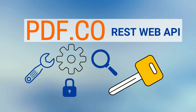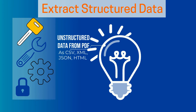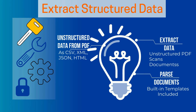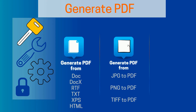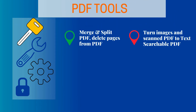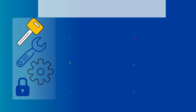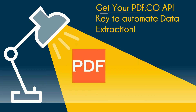PDF.co Web API key features include: extract structured data, generate PDF, PDF tools, and barcode tools. Get your PDF.co API key to automate data extraction.